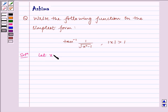Let x is equal to sec theta. Then under root x square minus 1 is equal to under root sec square theta minus 1, which is equal to tan theta.